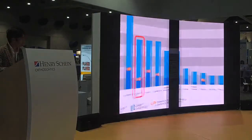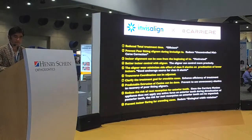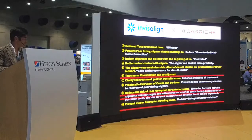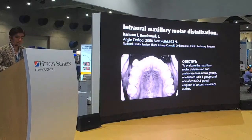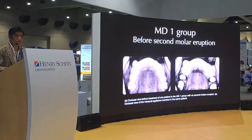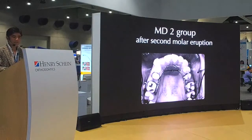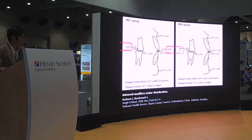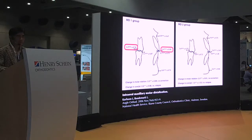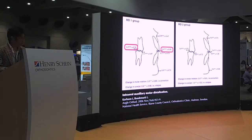Now I want to show you what I think are advantages — we have 10 advantages, but time is limited so I'll show you two parts. We try to distalize molars, and the question is: when is the best time to achieve molar distalization? One study compared two groups — without second molar eruption versus after second molar eruption. Without second molar eruption, you achieve molar distalization faster and more, with less anchorage loss of incisors. After second molar eruption, distalization is slower and you lose more anchorage.